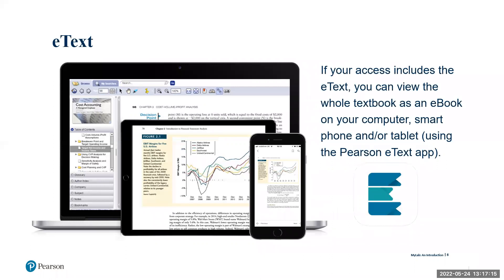The Pearson e-text is a wonderful tool that comes as a value pack on top of MyLab Programming. Students can access the digital version of the Pearson physical book. They can download the app from the App Store or Google Play on Android or iOS and access the book offline. From the instructor side, you can highlight content, leave notes, and bookmark pages, which automatically synchronize to the student's view.